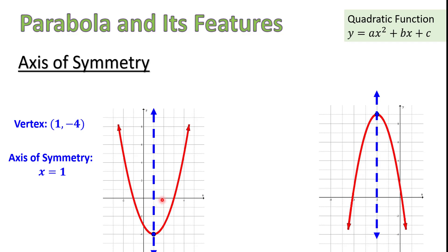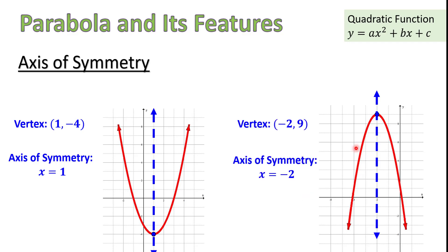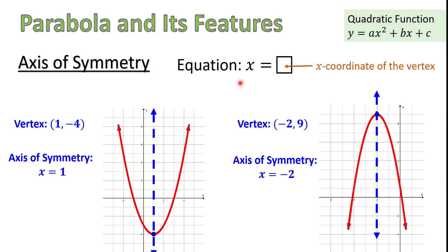Since the axis of symmetry goes through the vertex, the number at which the axis of symmetry crosses the x-axis is the same as the x-coordinate of the vertex. We can use this as a shortcut: if we know the coordinates of the vertex are (1, negative 4), then the axis of symmetry is simply x equals 1. Let's check that for the second example. The vertex of the second parabola is (negative 2, 9), and the axis of symmetry is the vertical line with equation x equals negative 2.